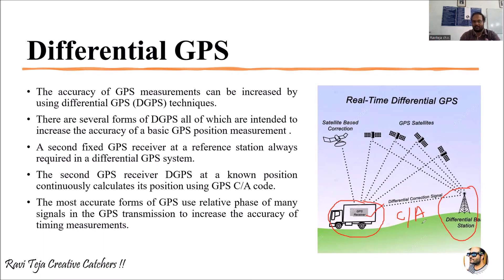As shown in the diagram, multiple satellites are trying to communicate with the GPS receiver in the truck, which keeps on moving. This is monitored by the differential base station, which acts as the secondary GPS receiver. If there are any errors, it can correct those signals. To obtain greater accuracy than a normal GPS, we use a differential GPS fixed somewhere near that particular GPS location.